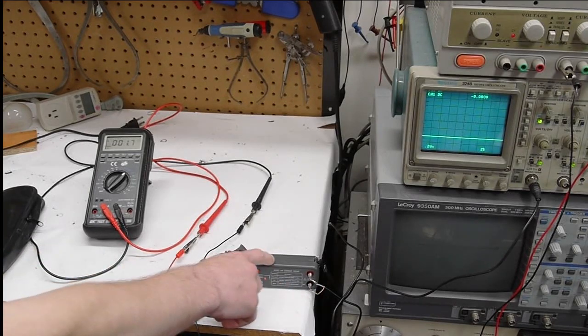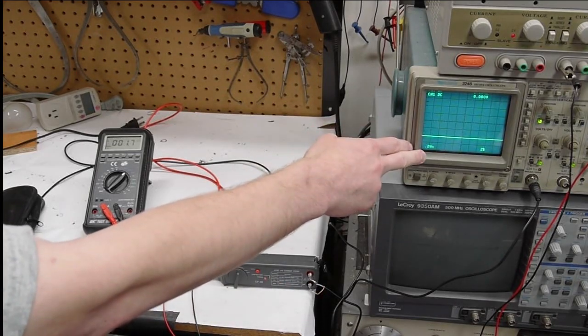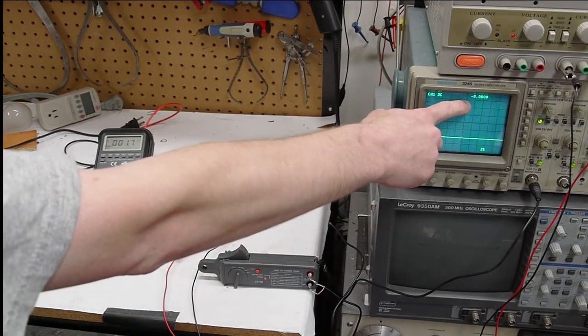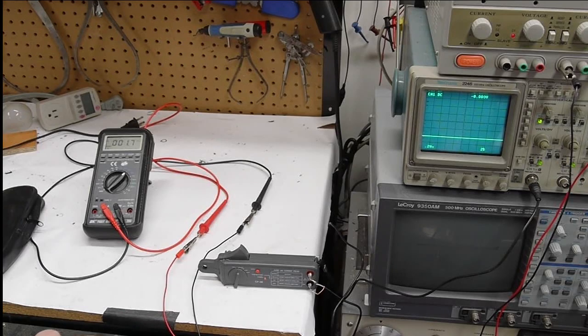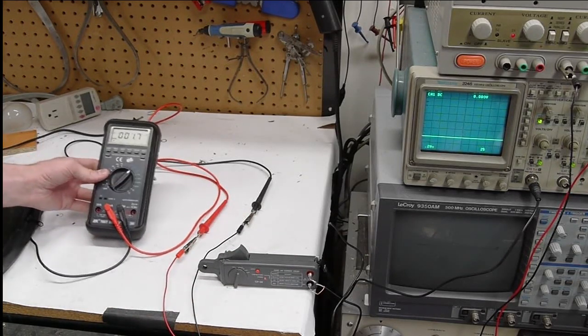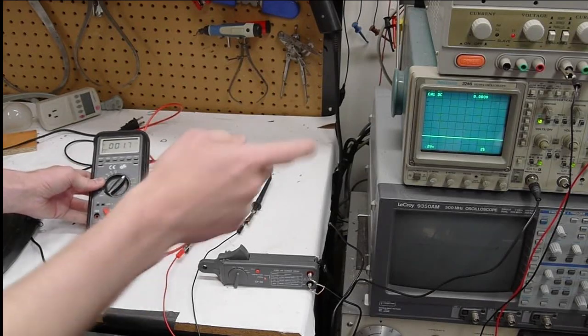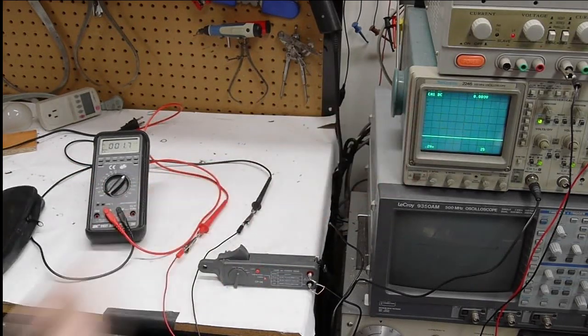And I currently have the probe connected to the scope here, which is just making a voltage measurement. I've been stalling on buying a second multimeter. There's too many choices, so I haven't picked one yet. So I just have this one multimeter. And I'm going to use the scope today to do the voltage measurement.